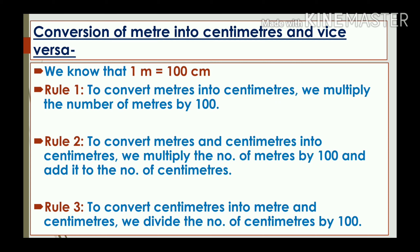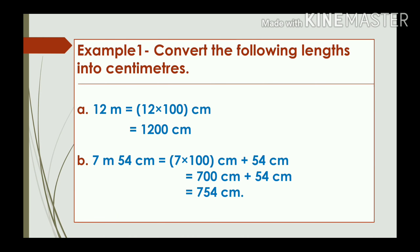Let's see the conversion of metres into centimetres and vice versa, knowing that 1 metre equals 100 centimetres. Rule 1: to convert metres into centimetres, multiply the number of metres by 100. Rule 2: to convert metres and centimetres into centimetres, multiply the number of metres by 100 and add the number of centimetres. Rule 3: to convert centimetres into metres and centimetres, divide the number of centimetres by 100. Let's see some examples.